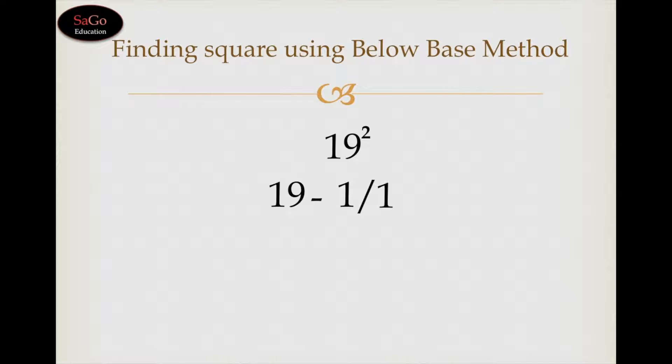19 minus 1 is 18. Write 18, put a slash, 1 squared is 1. Now we need to check how many zeros are there in the base 20.